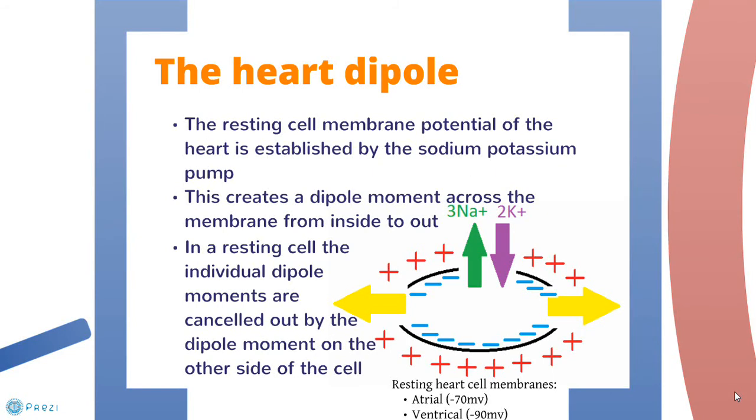As well as creating a resting membrane potential individual dipole moments are created across the cell from the inside to out represented by the yellow arrows. However each of these individual dipole moments are cancelled out by the dipole moment on the other side of the cell. This means you get a total dipole moment of zero for the cell and this explains why you get no signal recorded from a resting heart cell on an ECG despite the presence of dipoles.